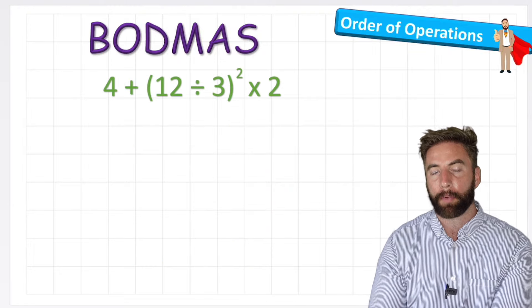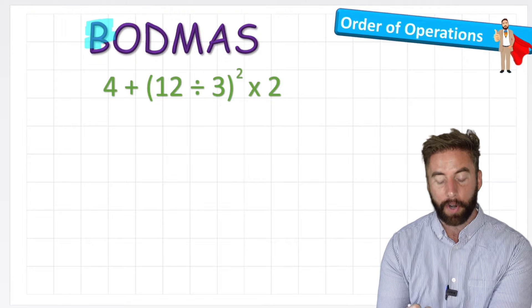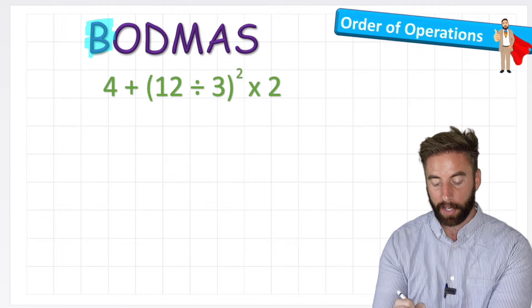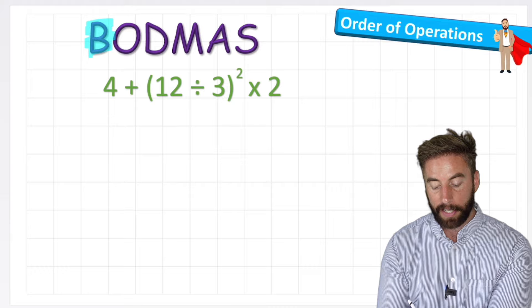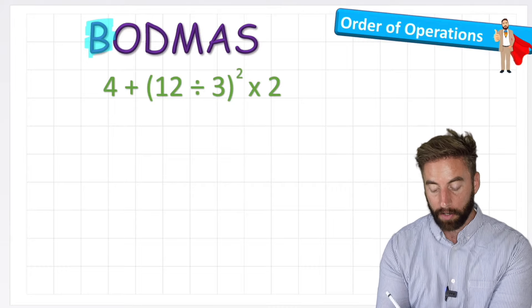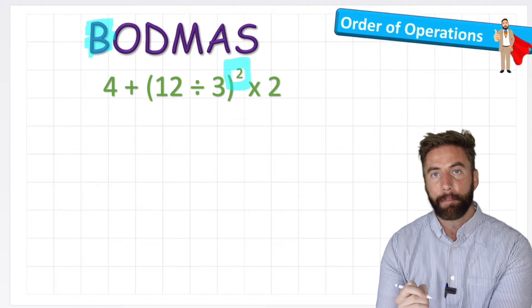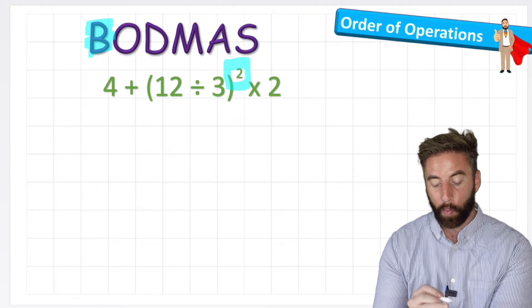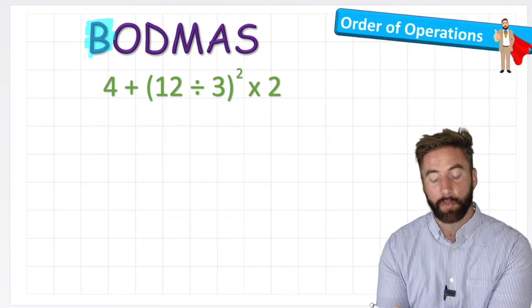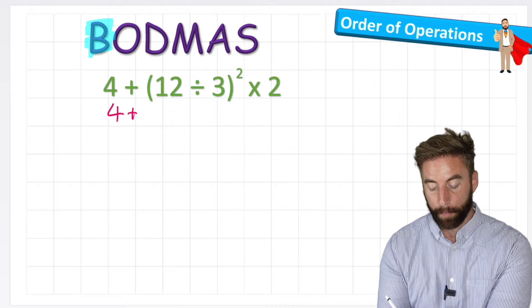So let's follow our order of operations and try and solve this question then. So our first order is brackets. So we're going to solve the question in the brackets first. And in my brackets, I can see 12 divided by 3. Now, some of you might have noticed that our power of 2 is connected to the brackets. But because it's not in the bracket, we're not going to do that at this stage. So I'm going to rewrite my next line, and it would be 4 plus... Now I can solve the brackets.